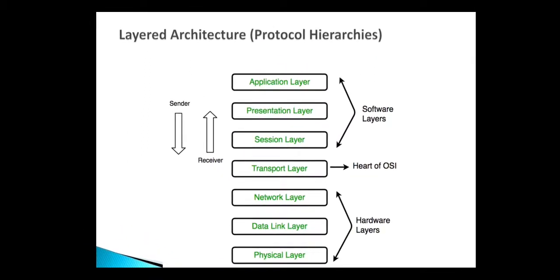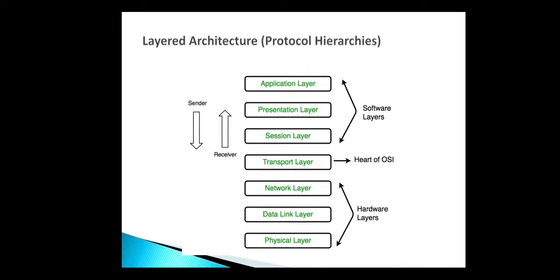This is the layered architecture of the OSI model — a protocol hierarchy having seven layers: application, presentation, session, transport, network layer, data link layer, and physical layer. The upper three layers are related to software and are called the software layers. The transport layer is the heart of OSI. The network layer, data link layer, and physical layer are related to hardware resources used during data communication and transmission, which is why these are called the hardware layers.